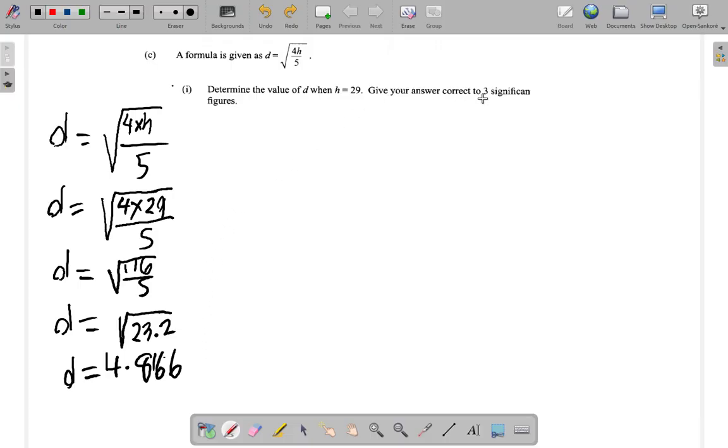They say 3 significant figures. So considering that, what is D really?